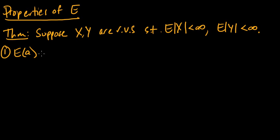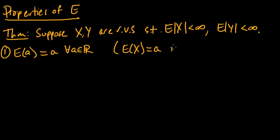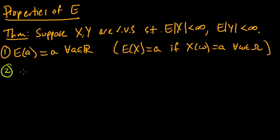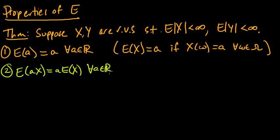The first property is that the expected value of a constant A is just equal to that constant, for any real value A. By this I mean the expected value of a random variable X equals A if X is identically equal to that constant. The second property is that the expected value of A times X equals A times the expected value of X, again for any real number A.